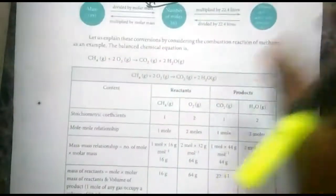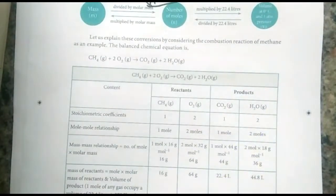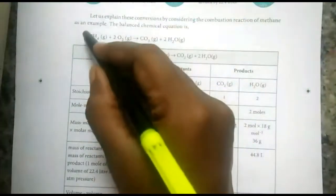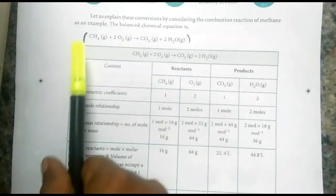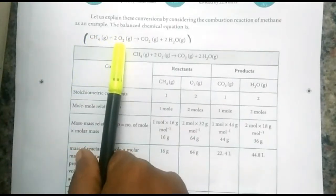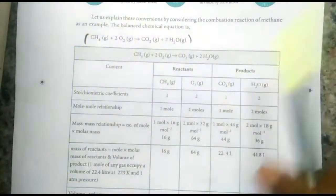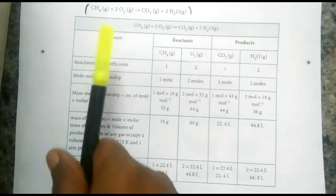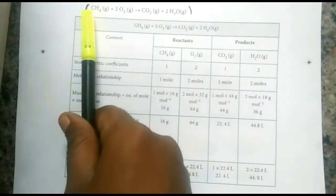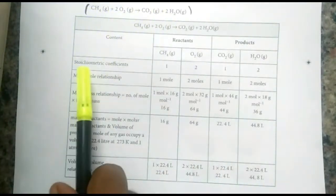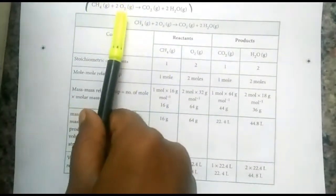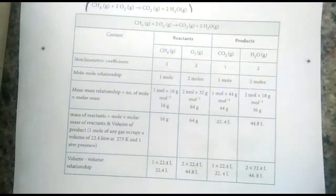Stoichiometry gives a numerical relationship between two quantities in a balanced chemical equation. Consider the combustion of methane: one mole of methane reacts with two moles of oxygen, giving one mole of carbon dioxide and two moles of water. The stoichiometric coefficients are: methane = 1, oxygen = 2, carbon dioxide = 1, water = 2.